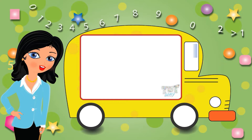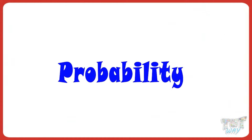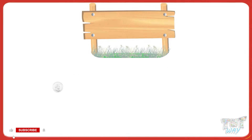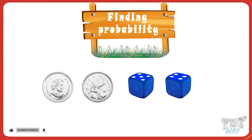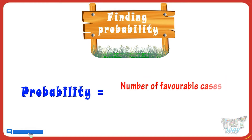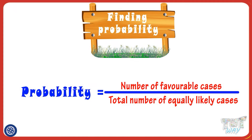Hi kids! As we learned a few basics about probability in the previous lesson, now we are ready to learn how we can find the probability in numbers. We can find the probability of an outcome or case in a probability experiment with the formula: number of favorable cases divided by total number of equally likely cases. Let's learn it more with the help of a few easy examples.